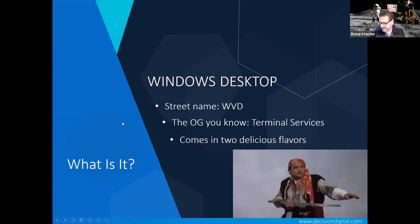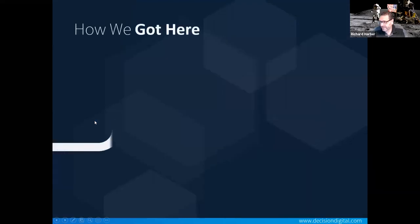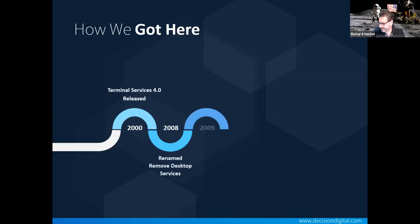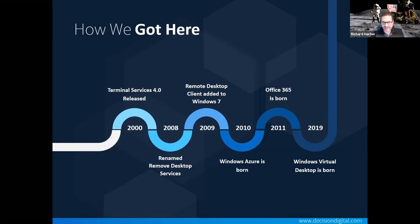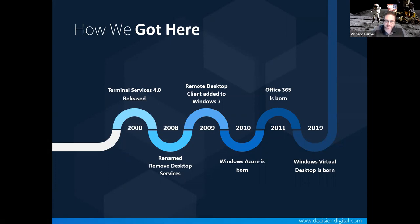How do we get here? I thought it was important to explain where this came from and why it really matters. This actually came from a technology called Terminal Services — as you can see on the timeline, that was happening 20 years ago. For those in the managed service space and for end customers, it's important to know that this is not a new technology. It is an evolved technology that has been continually getting refined for the last 20 years.